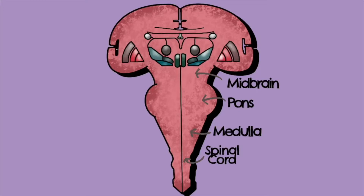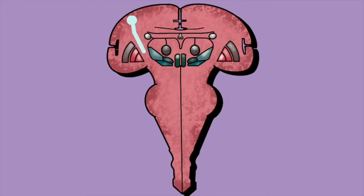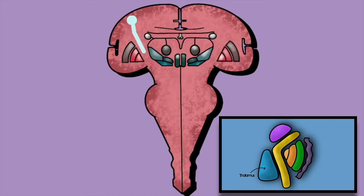We're going to start at the beginning where the cell bodies of this tract are located, which is in the cerebral cortex. The cell bodies reside in the cortical areas related to the head and face — mostly the lateral surface of the motor strip — and the fibers descend through the corona radiata, the area just below the cortex where white fibers converge.